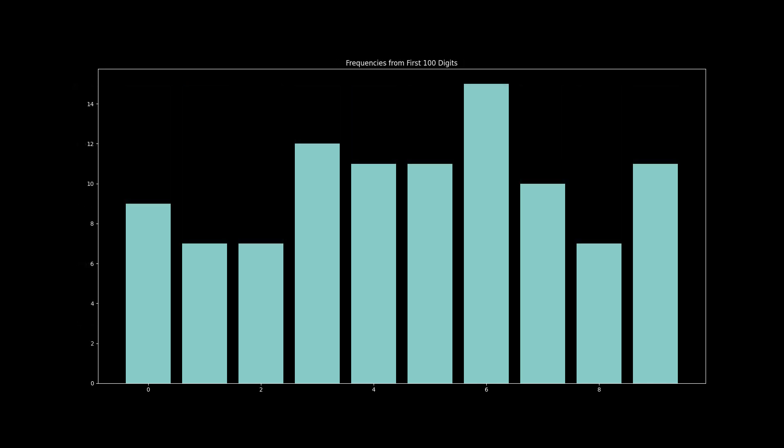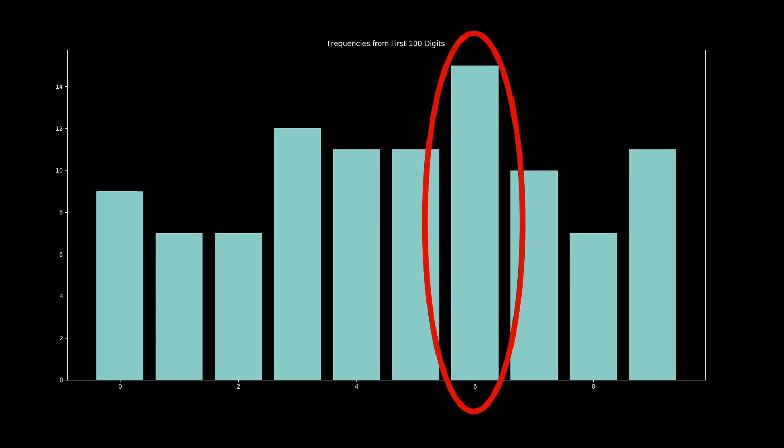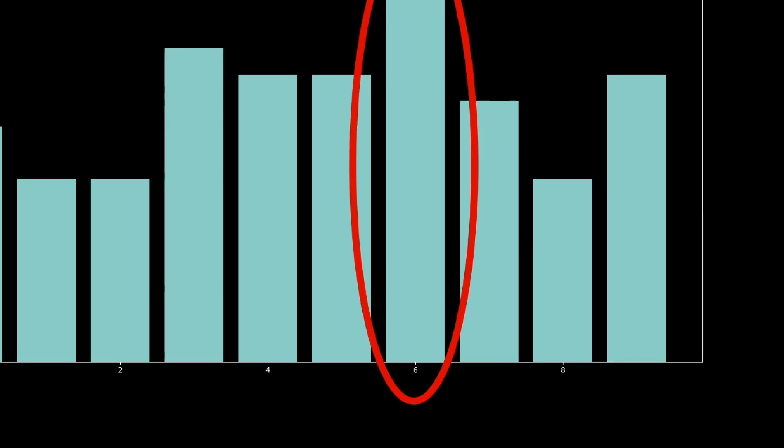But wait a minute, you say. Those first 100 digits looked a little bit unbalanced. What's with all the sixes? Maybe there's some hidden structure to these digits after all.